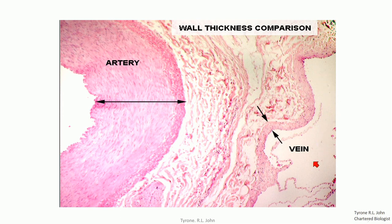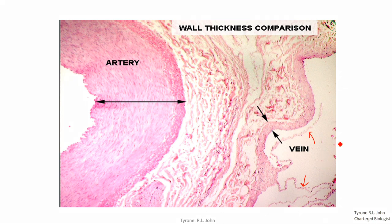Within the vein lumen, a valve is visible — one part here and another part there. When preparing slides for microscopy, some structures become distorted, and the vein valve, being a fragile structure, will distort during slide preparation. So it won't look exactly like that in a functioning vein, but the image clearly shows the presence of the valve.